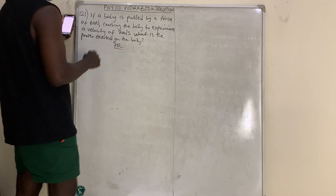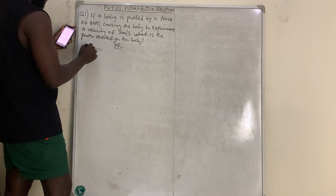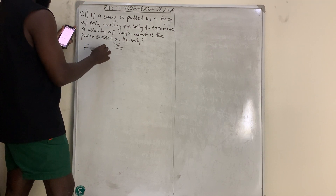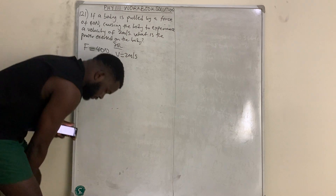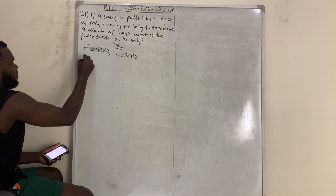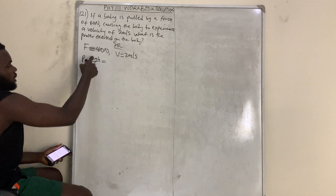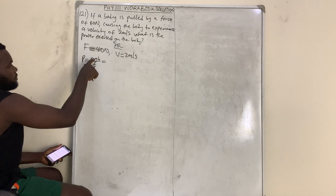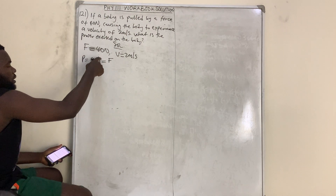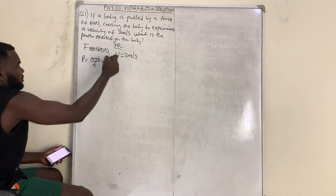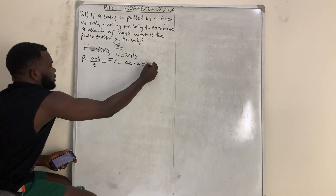Solution: the first thing they give us is force F = 40 newtons, and velocity = 2 meters per second. Power equals mgh over t, which is potential energy over time. Since mg is force and h over t is velocity, power = force × velocity = 40 × 2 = 80 watts.